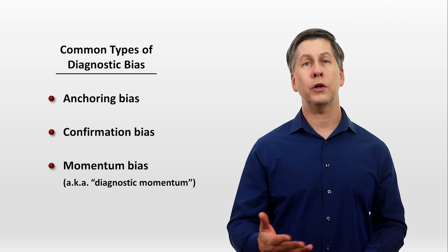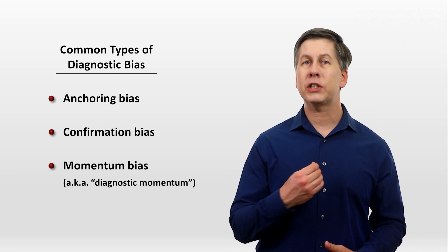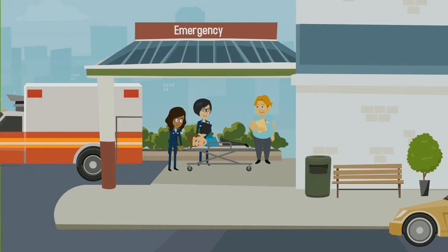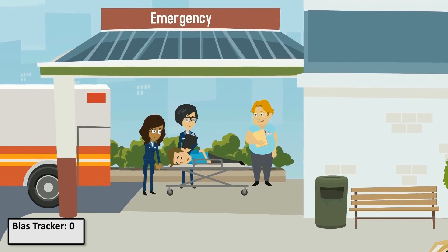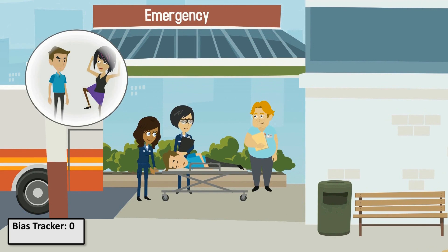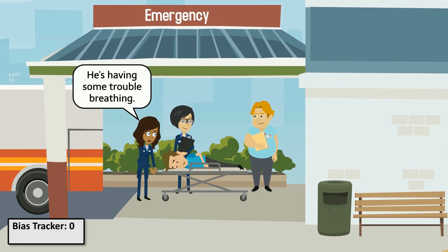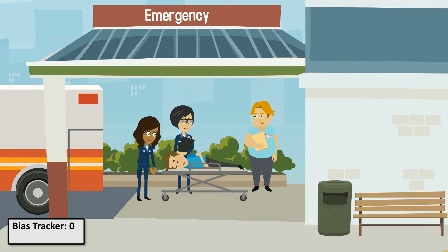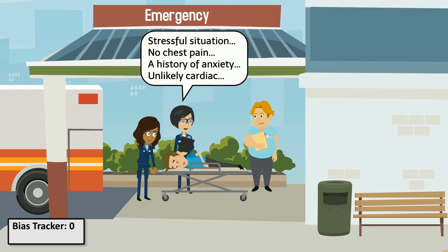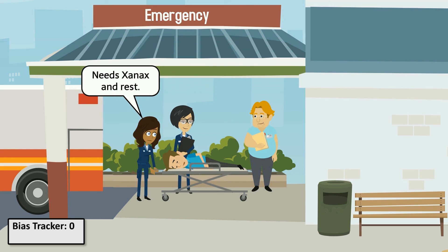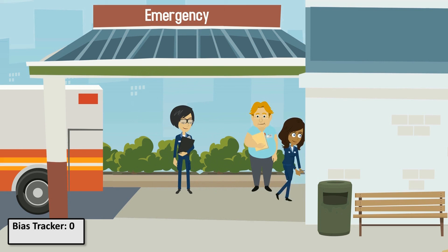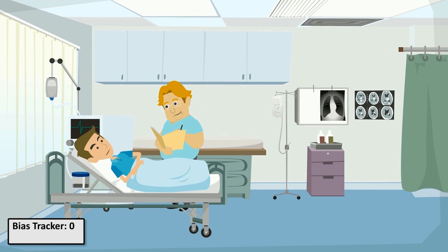To see how these biases and a few others might play out in real life, let's look at a reenactment of a scenario that I've seen as a hospitalist. Imagine a 65-year-old man with a history of diabetes and anxiety who was brought to the ER by ambulance after developing difficulty breathing during a family argument. When the paramedics drop him off, they communicate the patient's symptom and medical history to the ER nurse along with his vitals and whatever treatments were given en route. They conclude their sign-out by saying, 'Given the situation in which the patient became ill, his lack of chest pain, and his history of anxiety, his breathing problems don't seem to be cardiac in origin — probably just needs a Xanax and some rest.' The ER nurse proceeds to conduct her own assessment, retaking the history and reexamining the patient. While doing so, even if she's consciously trying to stay as objective as possible, in the back of her mind she still may be thinking: probably a panic attack.